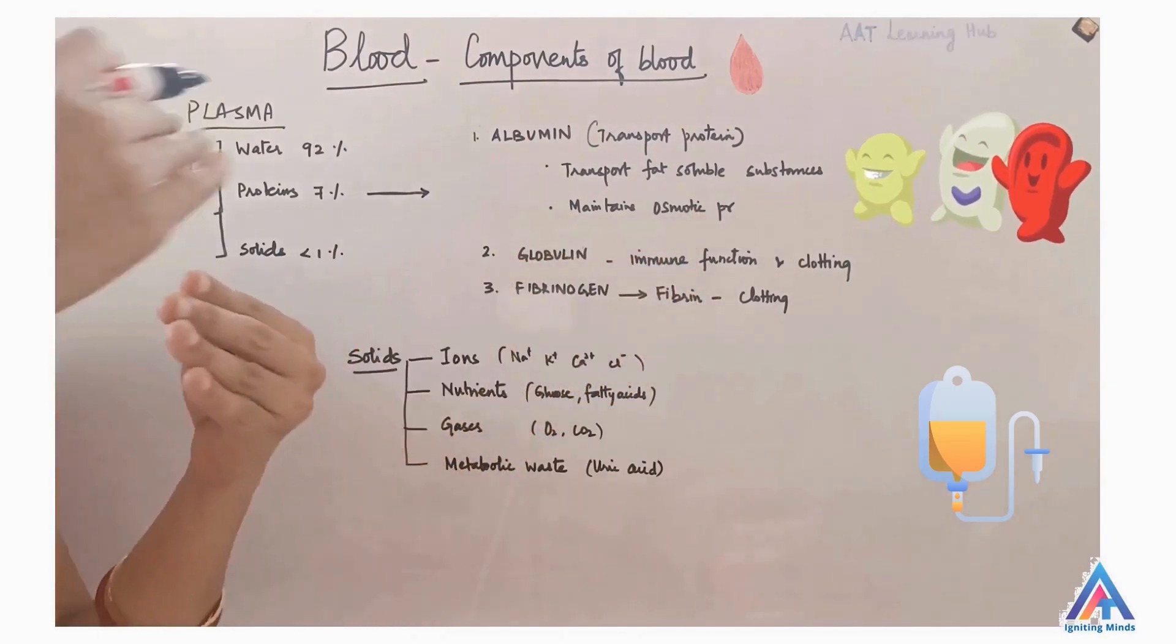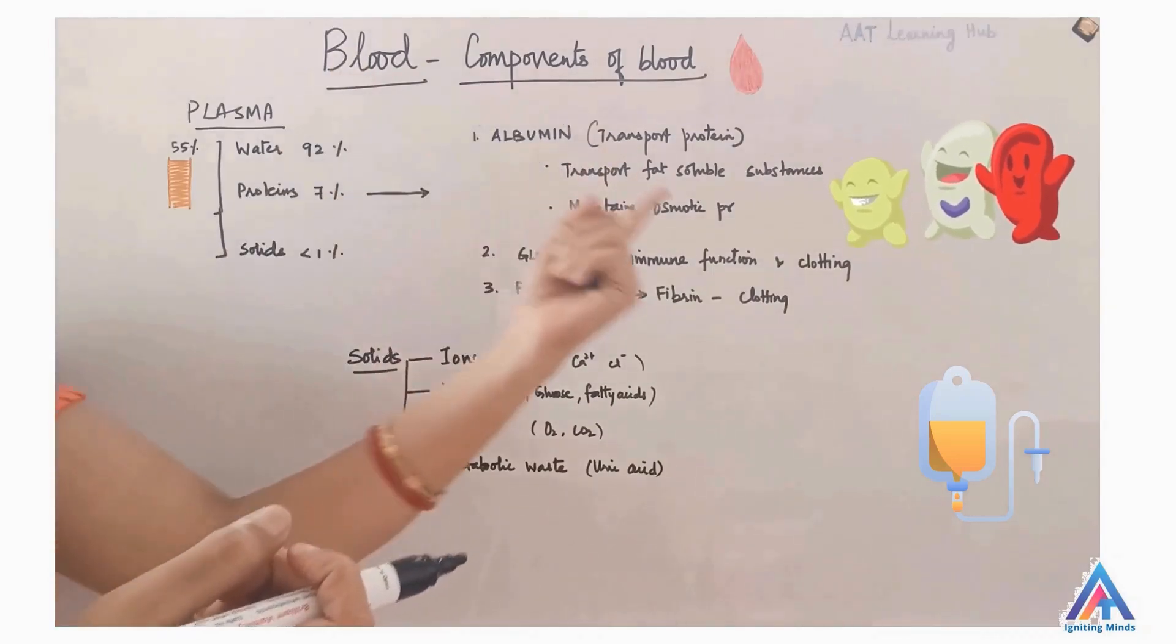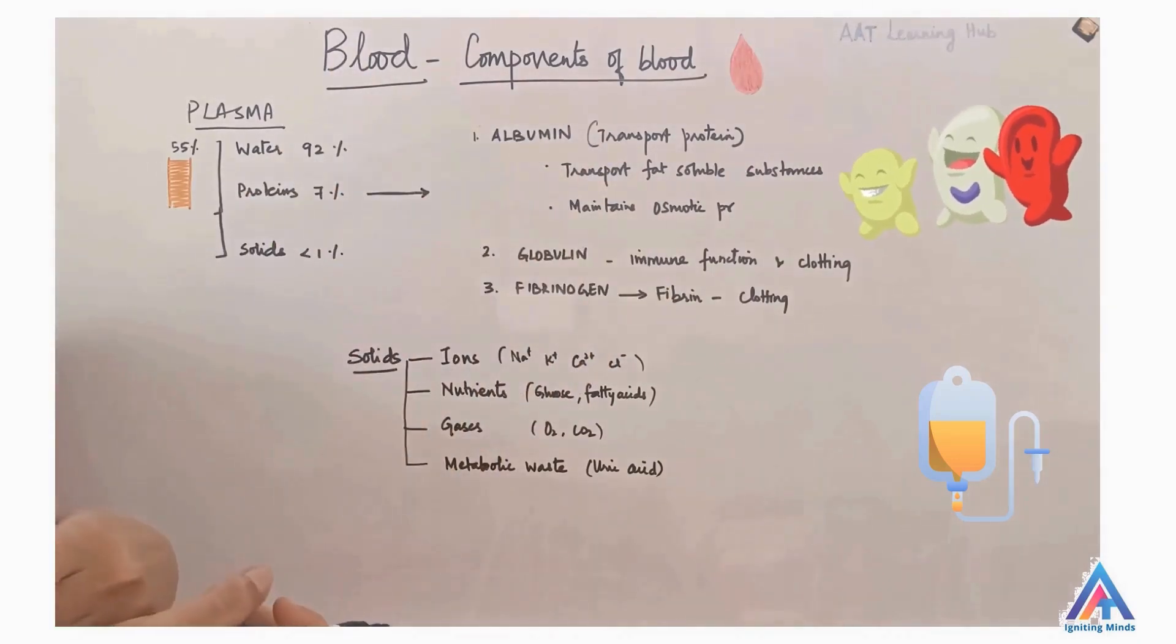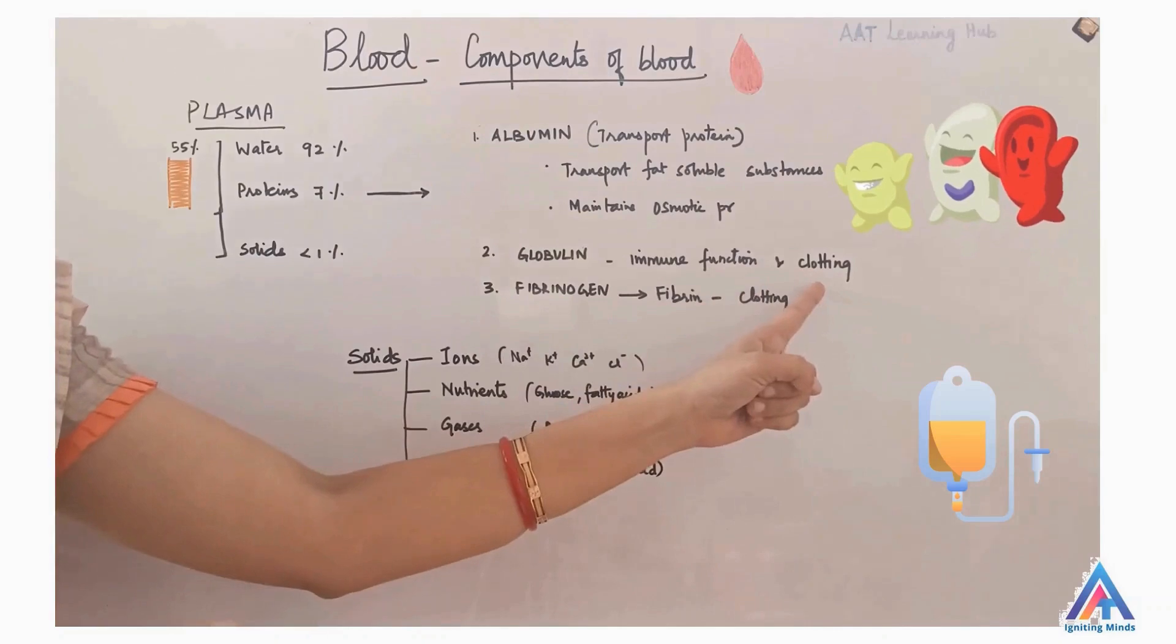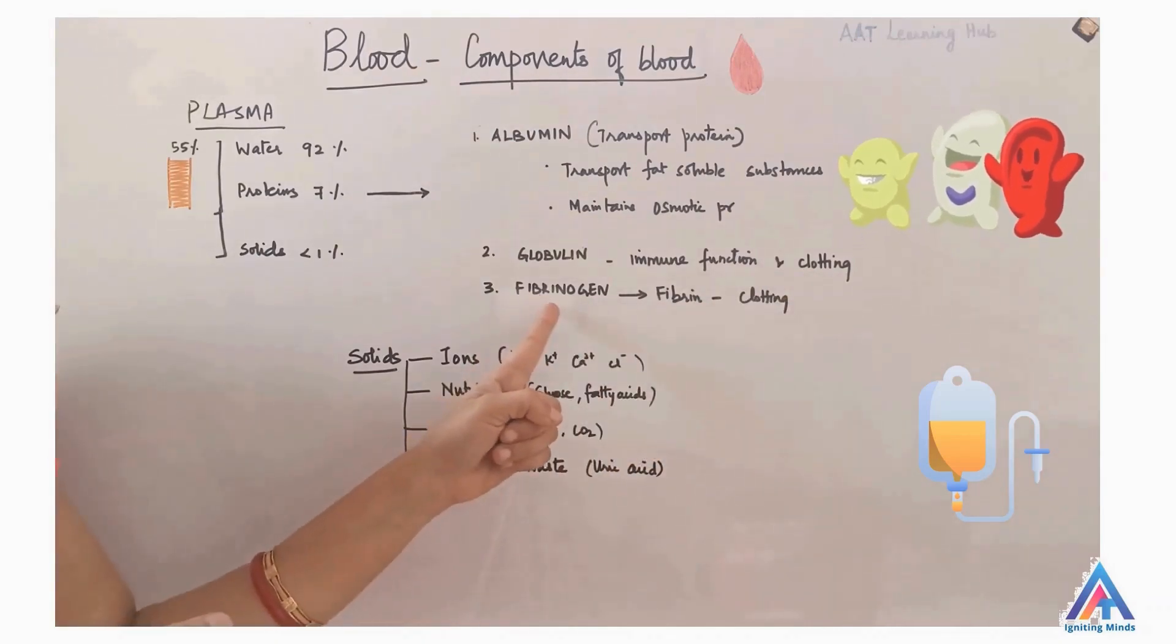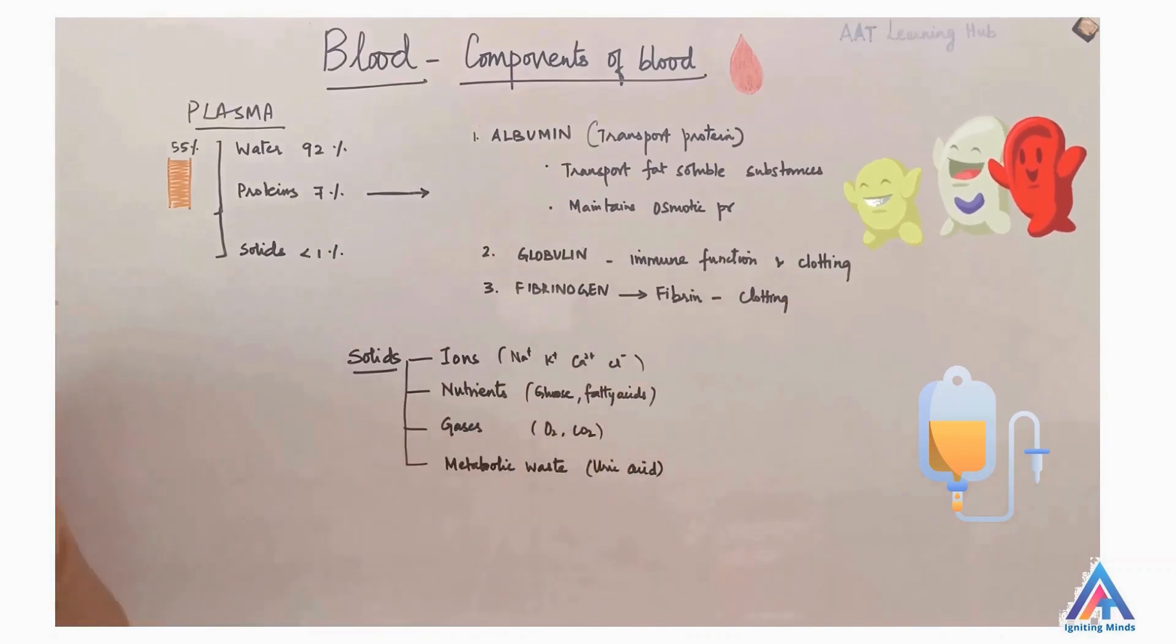Whenever water in the blood seeps into the interstitial spaces, albumin helps to pull the fluid back into the vessels, thereby maintaining osmotic pressure. Second is globulin that helps in immune function and clotting. Third is fibrinogen that gets activated to fibrin and is involved in clotting process.